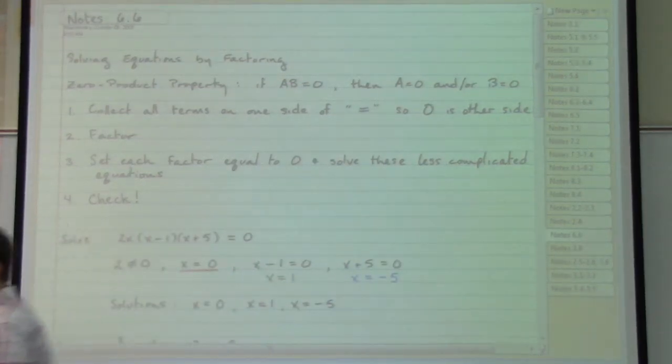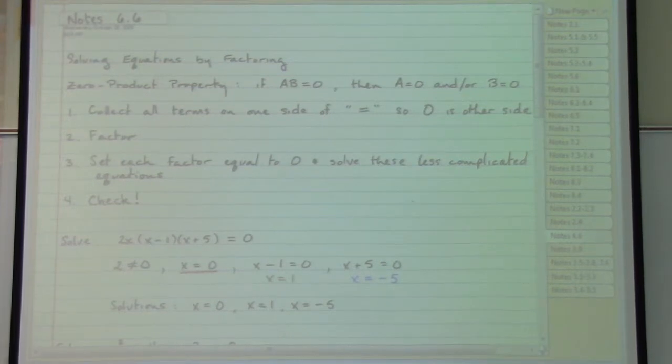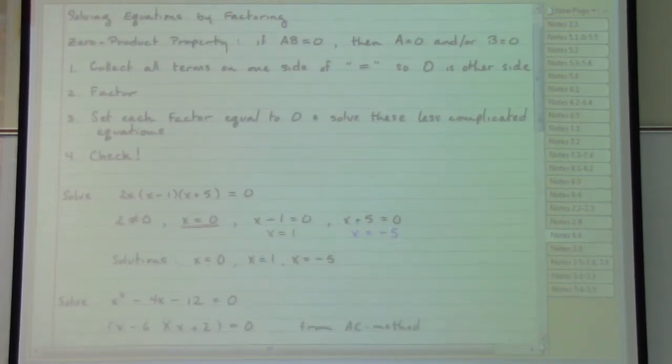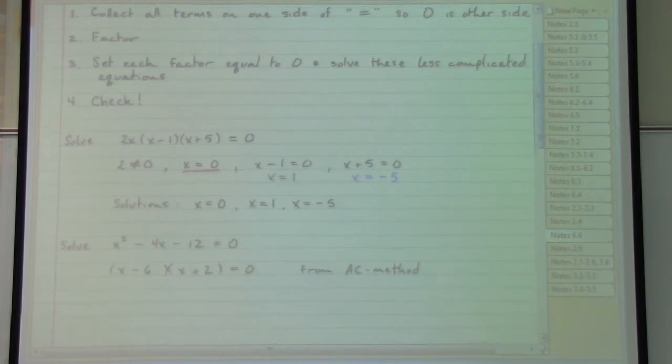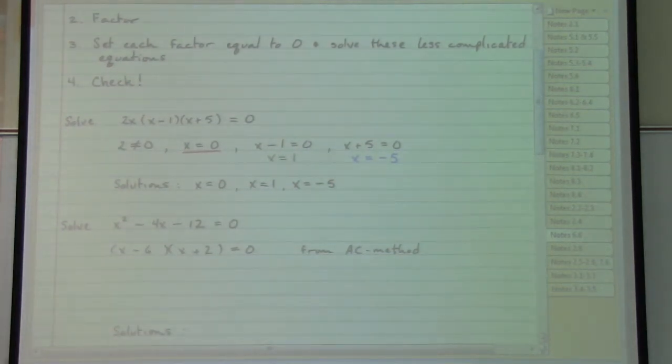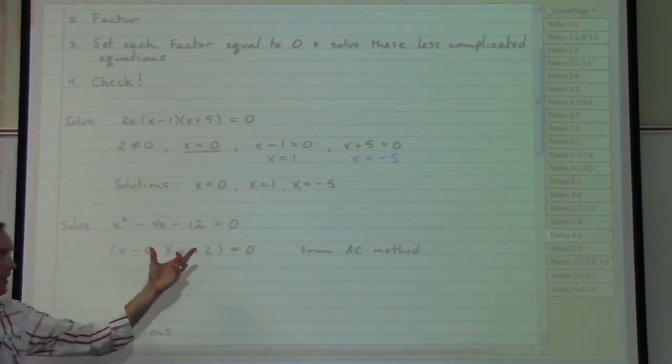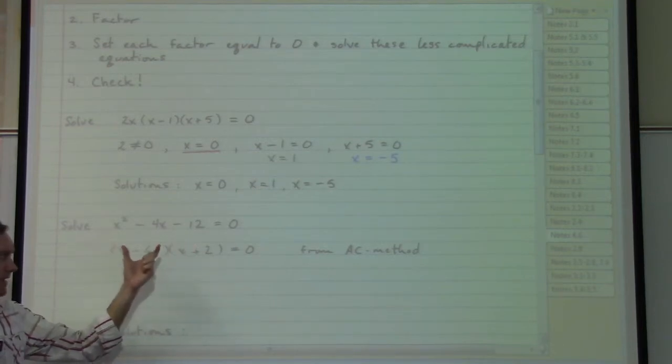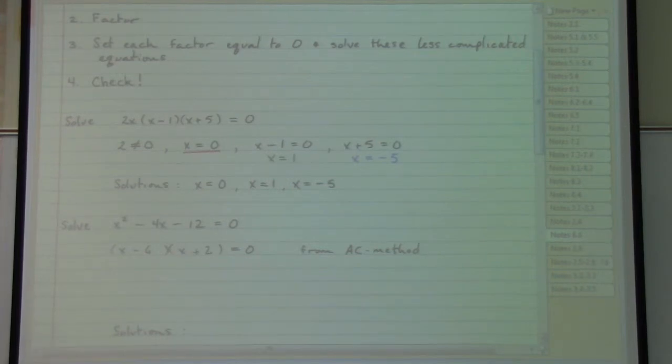Such as x squared minus 4x minus 12 equals zero. The first step indicated that we needed to have the equal zero, which we already have. The second step indicated that we would need to factor, which I've already done for you. Using the AC method, we have the factors x minus six and x plus two. The third step again tells us that we take each factor and set it equal to zero. So x minus six is equal to zero gives us x equals six.